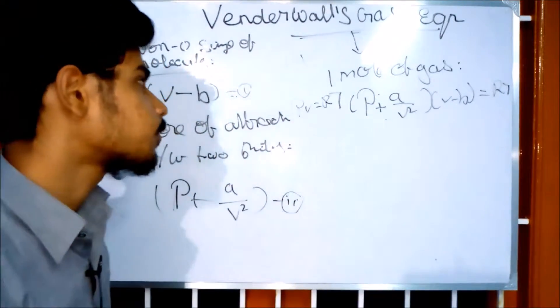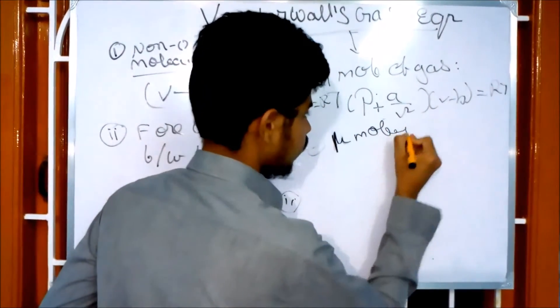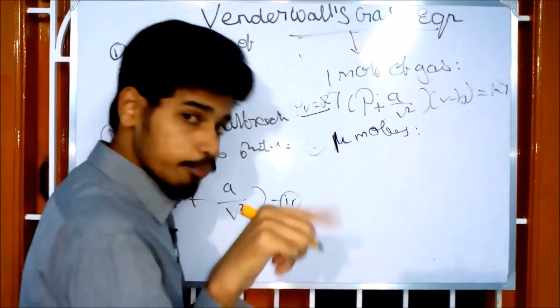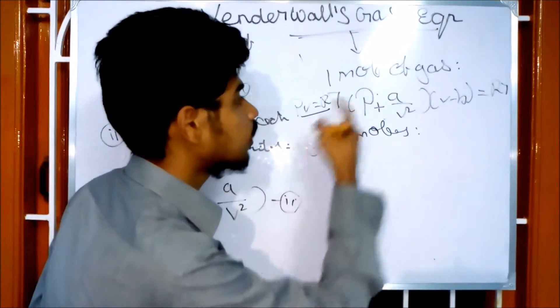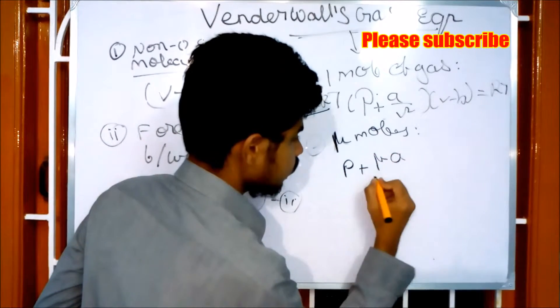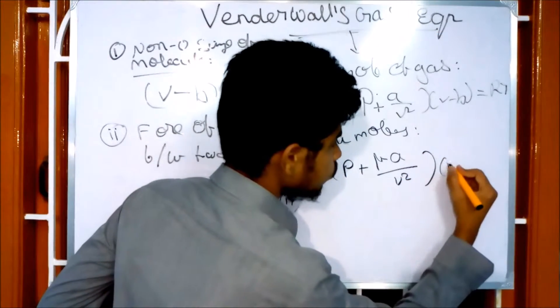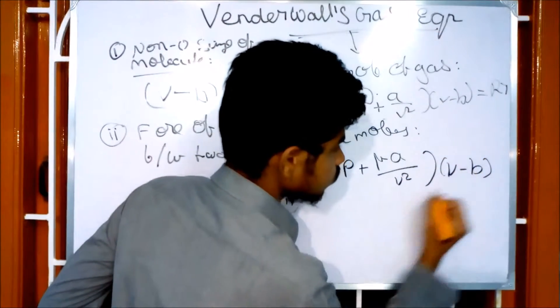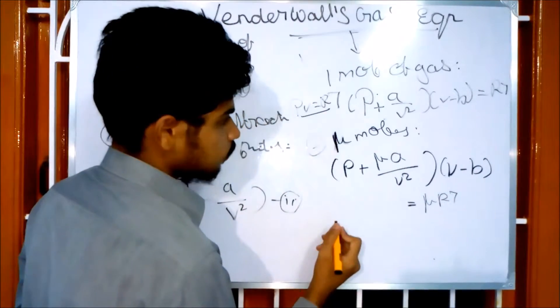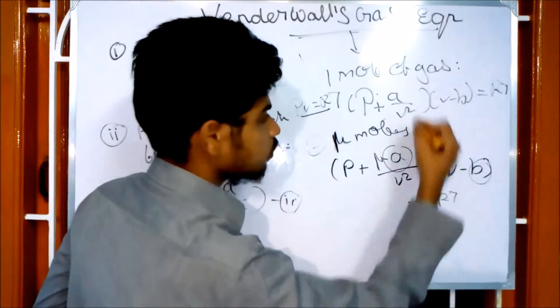Next, for μ moles of gas, PV = μRT for ideal gas. The Van der Waals equation becomes: (P + μ²a/V²)(V - μb) = μRT. Here we need to consider the dimensions of the constants.